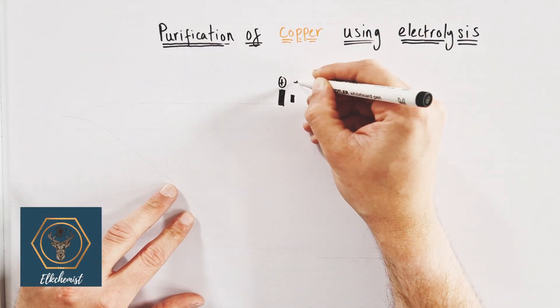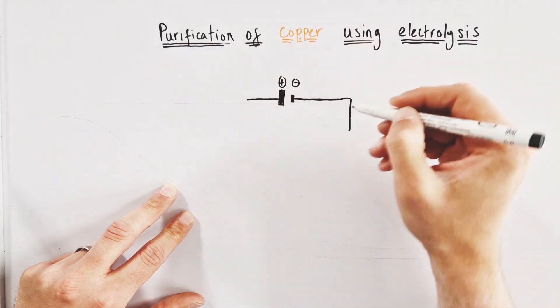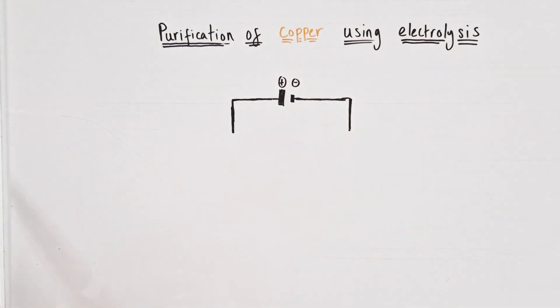Welcome to this video about the purification of copper using electrolysis. First thing being drawn is a DC or direct current power supply.